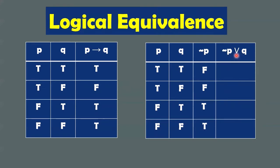This is a disjunction. What do we know about disjunction? If at least one is true, the combination is true. So we focus on these values. T or F — that's true, because there's at least one true. Then false. Then true. Then true again. So we have these values: T, F, T, T.